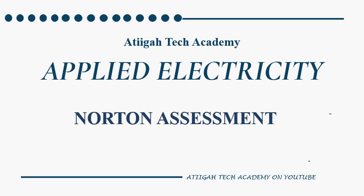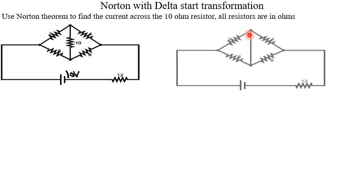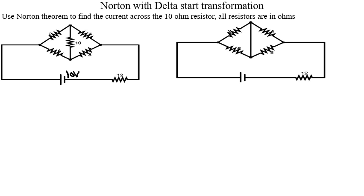Our first question says: use Norton's theorem to find the current across the 10-ohm resistor — all resistances are in ohms. This 10-ohm resistor is the one we need to find the current across. Applying Norton's theorem, we take this 10-ohm resistor out of the circuit, and after removing it we name the current flowing through it as IN.